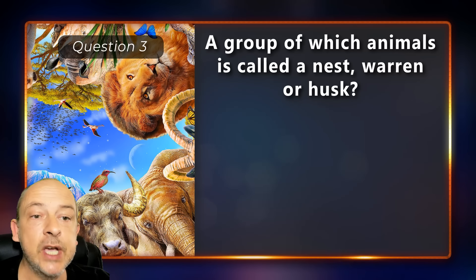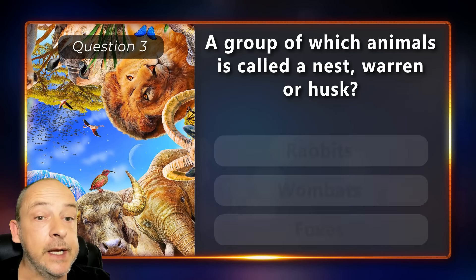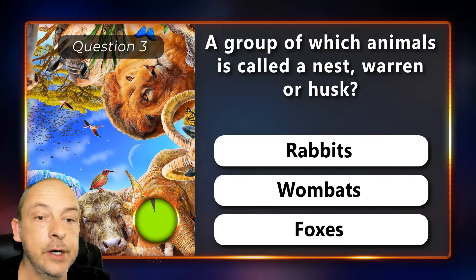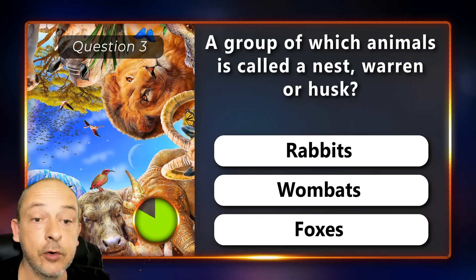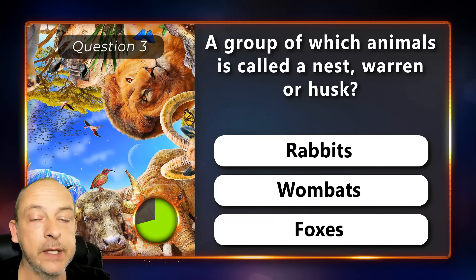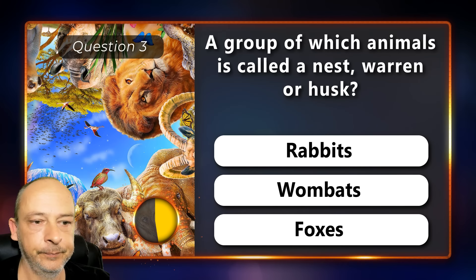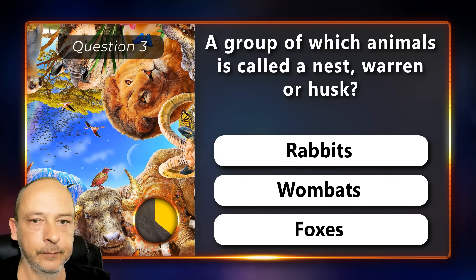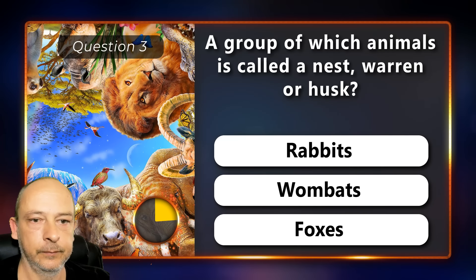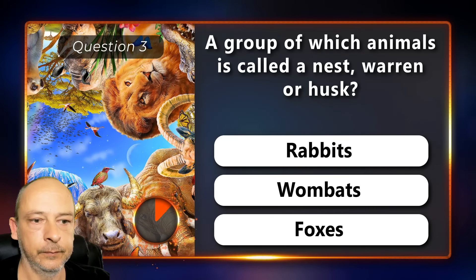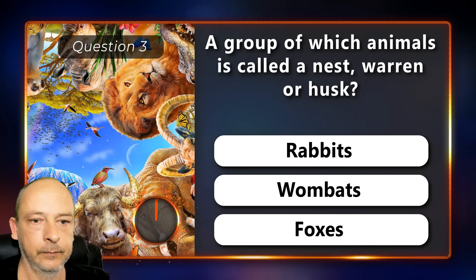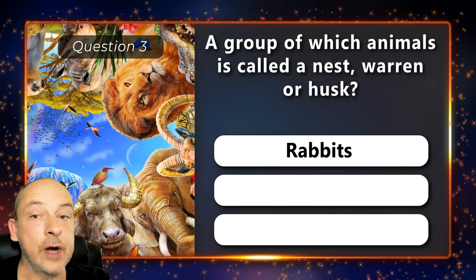A group of which animals is called a nest, warren, or husk: rabbits, wombats, or foxes? The answer is rabbits.